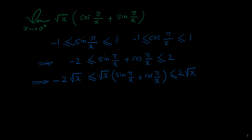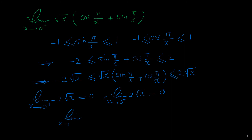Now we use the squeeze theorem. The limit of negative 2 times square root of x as x approaches 0 from the right: plugging in 0 gives negative 2 times square root of 0, which is 0. The limit of the right function 2 times square root of x as x approaches 0 from the right is also 0. Because the left and right limits are equal, the limit of the middle function — square root of x times (sine of pi over x plus cosine of pi over x) — is also 0.